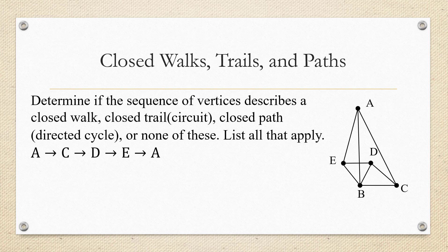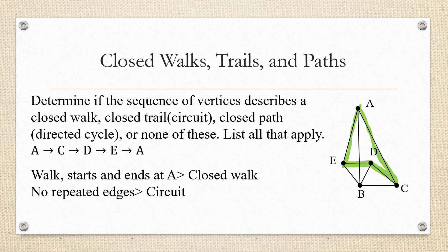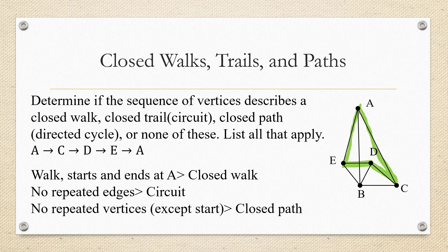Let's do one more: A to C to D to E to A. Tracing it: A to C, then to D, then to E, then back to A. It stays on the graph, so it's a closed walk. It has no repeated edges, so it's a circuit. Does it visit any vertex more than once? It doesn't — except the starting vertex A, which we said is okay. So this is also a closed path or directed cycle. Final answer: it's all three — closed walk, circuit, and closed path.